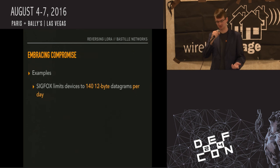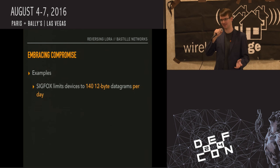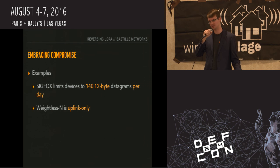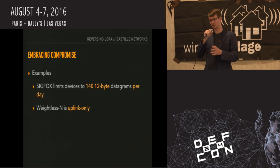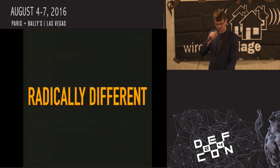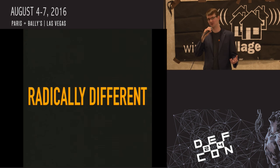Some examples of rate limiting: Sigfox limits devices to 140 twelve-byte datagrams per day — that's like a single UDP packet. Sigfox is uplink only, so it can only send messages up to a base station and cannot accept messages down. And LoRa Class A devices can only receive a downlink message from the base station after sending an uplink message — they're not promiscuously listening. So this is quite different, with some really unique capabilities.